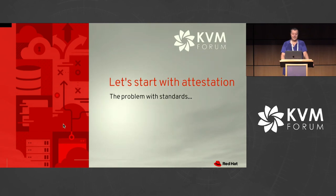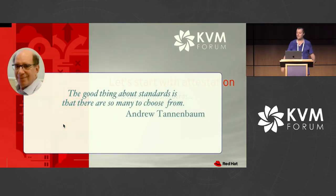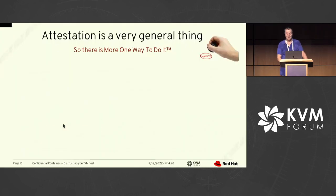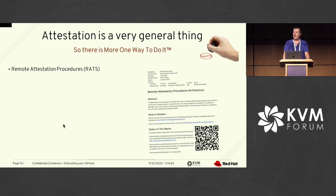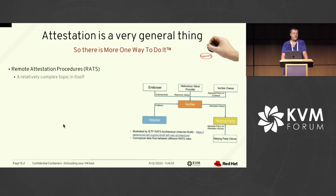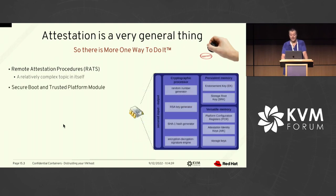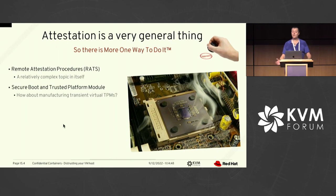So what is the problem? To quote Andrew Tanenbaum: "The good thing about standards is that there are so many to choose from." Attestation is a very general thing, and there is more than one way to do it. There is an IETF discussion about something called Remote ATtestation procedureS (RATS), which is a rather complex topic. The schema we have is what we're trying to implement in confidential containers. But there are also other closely related aspects — at least in the mind of customers — like secure boot or trusted platform modules. The question of how to implement a virtual TPM inside confidential computing remains a topic of hot research; we are discussing manufacturing transient virtual TPMs on the fly.